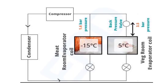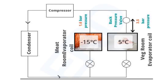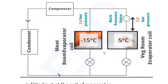First, let's take a look at the position. Here is a block diagram of the refrigeration system. We are dealing with two rooms: the meat room and the veg room. It is a multi-room system, and the back pressure valve is only found in a multi-room system. In the block diagram you can clearly see the condenser, compressor, evaporator, and the back pressure valve fitted at the veg room.